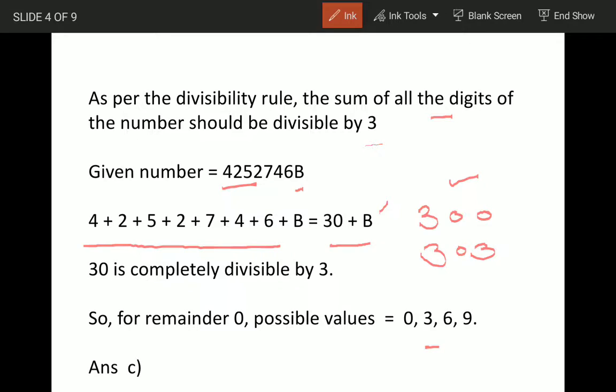which is again divisible by 3. Then B = 6, and then B = 9. After 9 we won't go because B is a single digit number. So there are 4 possible values. Answer is option C.